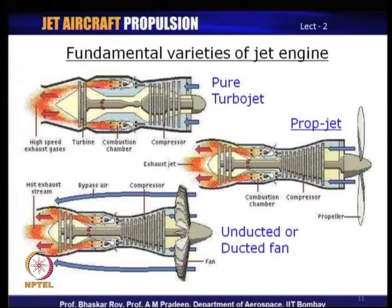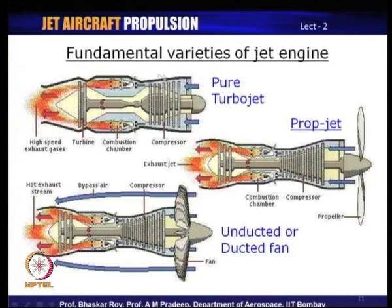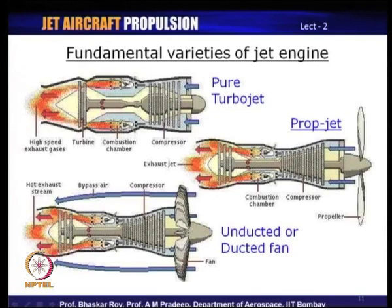Let us look at the various kinds of jet engines we will be discussing. The first kind is the pure turbojet, simply called a turbojet. The name comes from the fact that it has a turbine, and this turbine runs the compressor. The compressor raises air to high pressure, which is then used in the combustion chamber to burn fuel, and the high pressure, high temperature gas is let out — hence it is a turbine-based jet engine, called a turbojet engine.